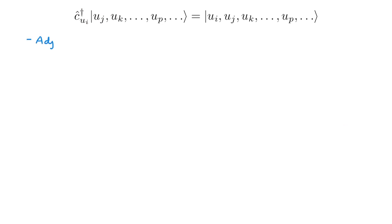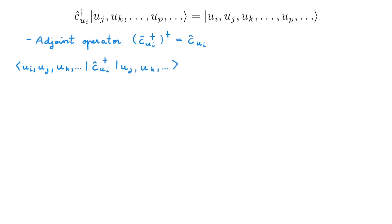What I want to discuss next is the adjoint operator of the creation operator, which is c_ui, and we will see in a moment that it is the annihilation operator. Let's write the matrix element of the creation operator between two Fock states where the bra has ui occupied and the ket has it unoccupied, but all other single particle states have the same occupancies. The action of the creation operator on the ket adds a particle to state ui, so we get the bra unchanged and the new ket with ui at the beginning. The two states in the bracket are now the same, so the matrix element equals one.